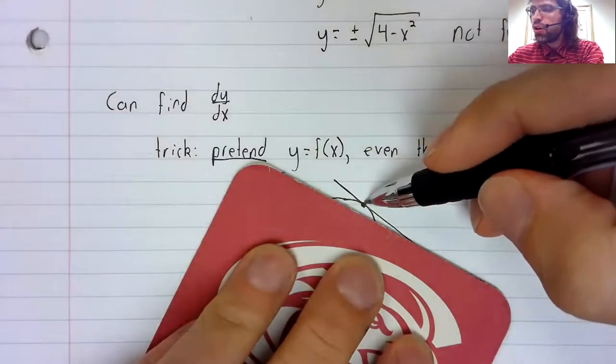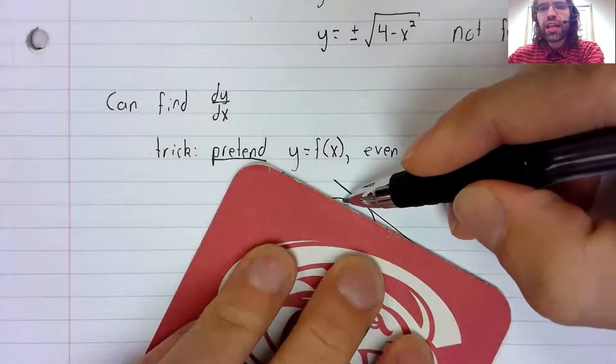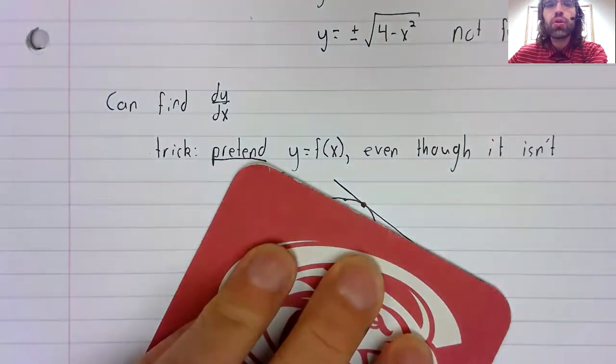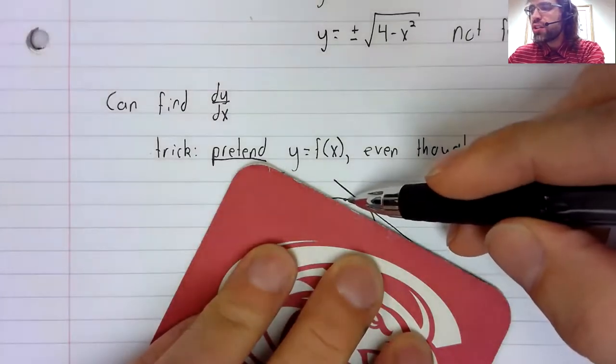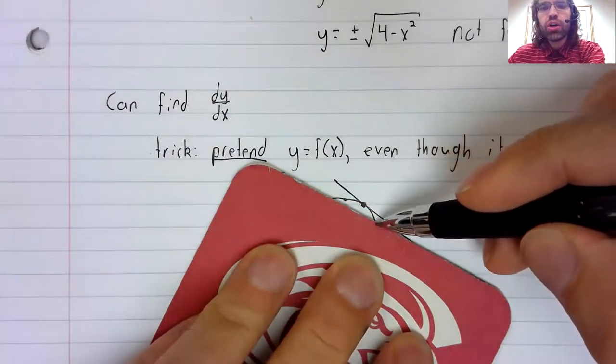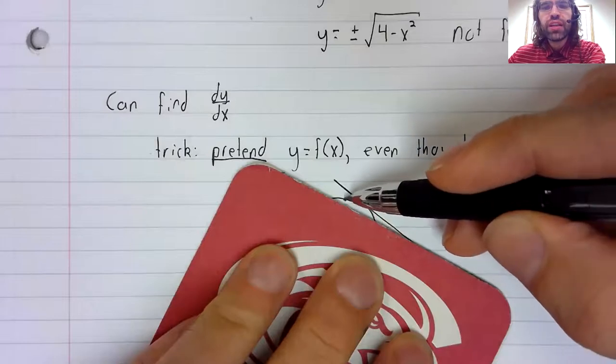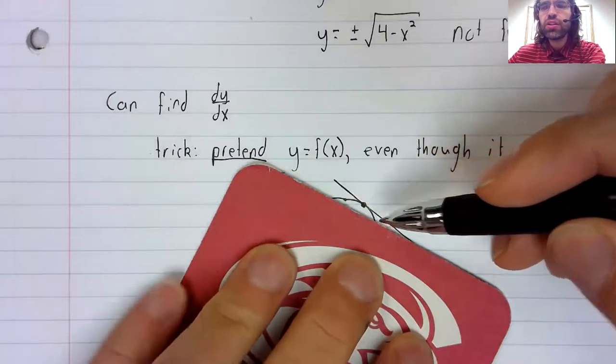And the bit of the curve that remains now passes the vertical line test. It's a function, so we can talk about taking the derivative of this function.